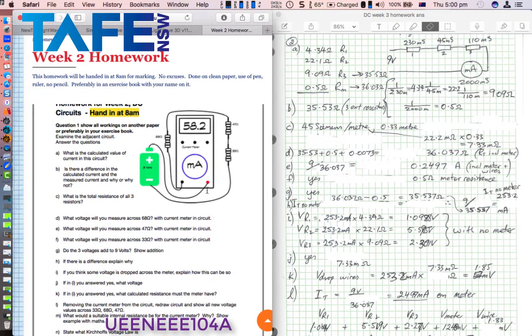That circuit took into account the DC resistance of that milliamp meter, and we were asked to solve the circuit including that resistance and without that resistance.